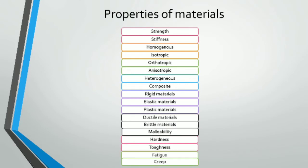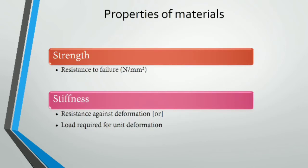We will discuss the main properties. What is strength? Strength is resistance to failure — we need to resist failure. The unit of strength is Newton per mm².